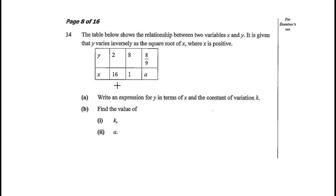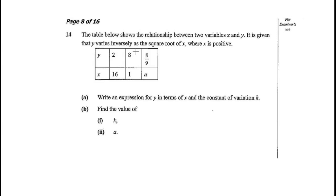In this video we're going to solve the GCE 2017 Mathematics Paper 1, focusing on the topic of variation. It's a very straightforward topic — we've already done a lot of questions in class, so this will be a quick run-through. With a little bit of practice, you'll be good to go.